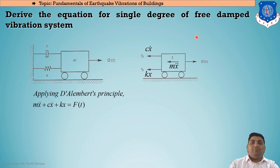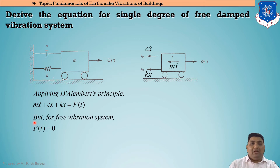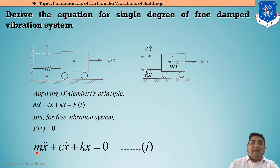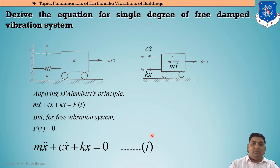Since this is a free damped condition, the external force is zero — as it is a free vibration system, F(t) = 0. So our generalized equation becomes Mẍ + Cẋ + Kx = 0. This is our generalized equation from which we will solve the entire derivation problem.